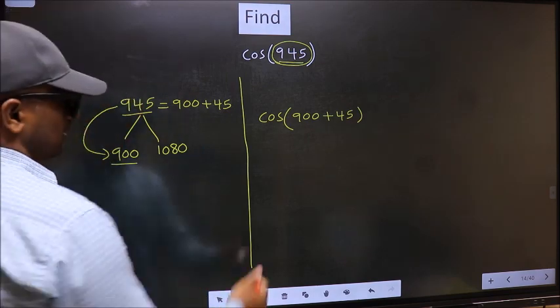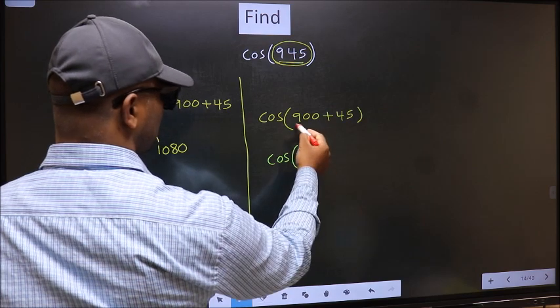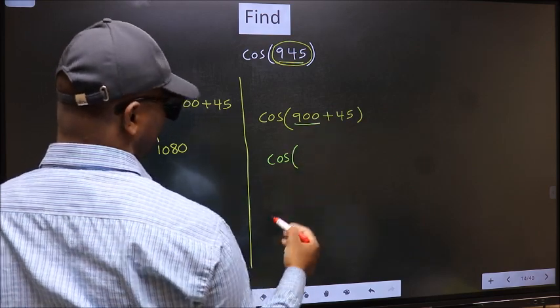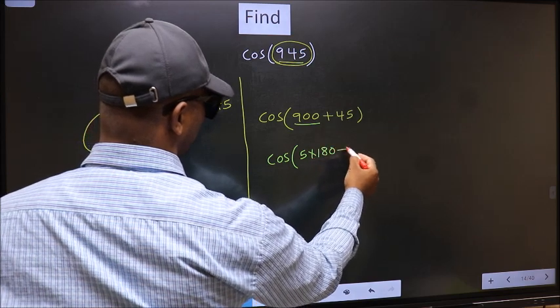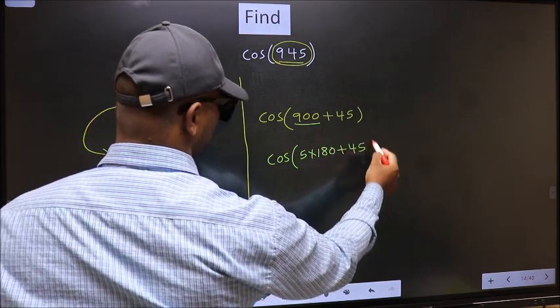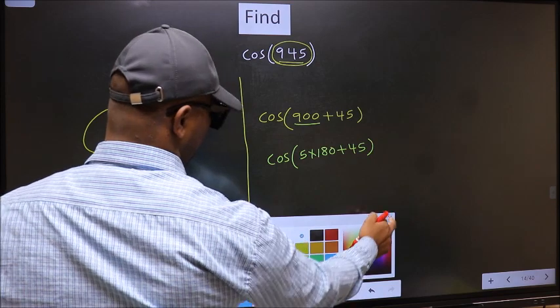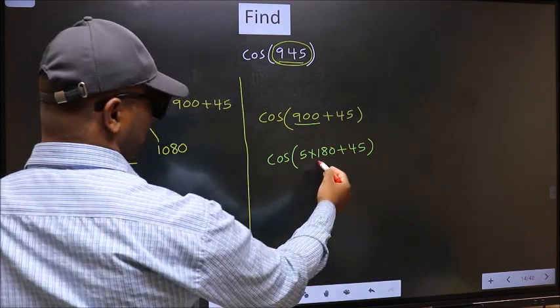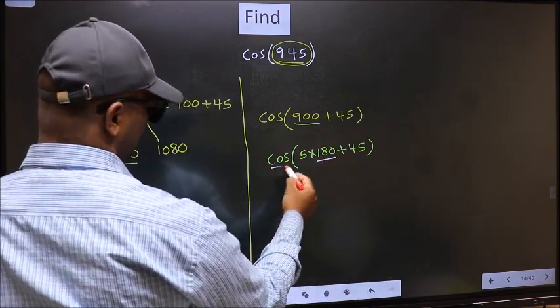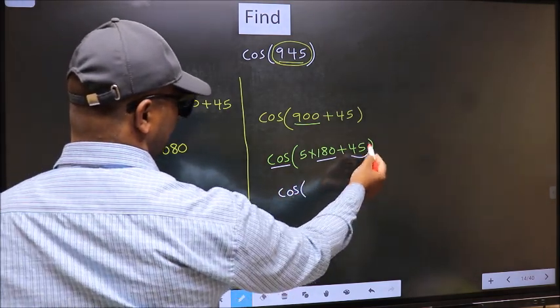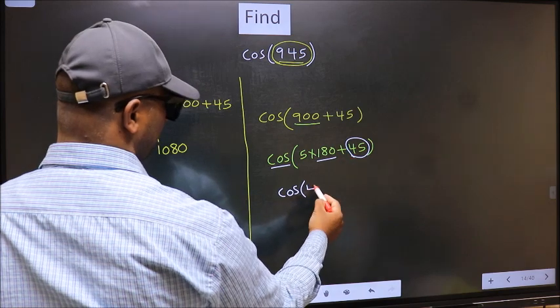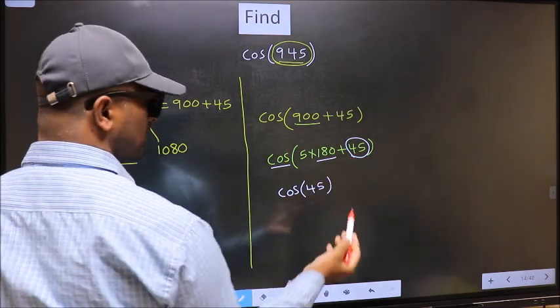Next, cos—now in place of 900, we write 5 into 180 plus 45. Next, here we have 180, so cos is not going to change. It will remain cos, and inside we get this angle 45.